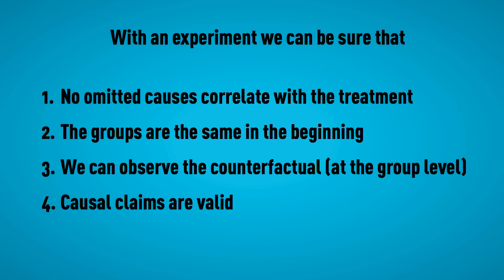So, the strength of the experimental design is that we can observe what is called the counterfactual. What would the treated group have received had it not received the treatment? That is what we observe in the untreated group. We can make a valid causal claim with an experiment. Remember, with an experiment we can be sure that no omitted causes correlate with the treatment. The groups are the same in the beginning. We can observe the counterfactual at the group level. Causal claims are valid.